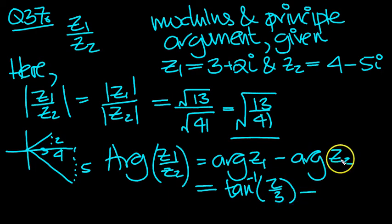Take away the principal argument of z2, which is a negative angle here, so that will change that to a plus. And this will be tan to the minus 1. It's an acute angle here. Opposite is 5, adjacent is 4, so it's 5 over 4.